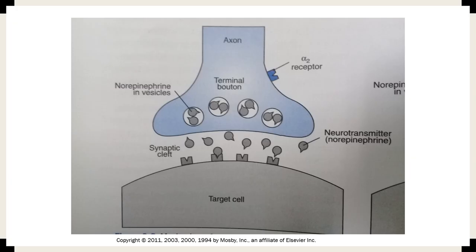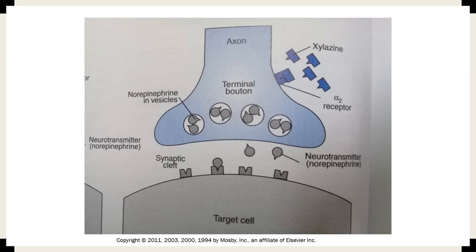To review the mechanism of action of our alpha-2 agonists: we have the axon and the target cell. In the axon, we have vesicles that contain norepinephrine. The axon also has the alpha-2 receptor. What alpha-2 agonists will do — particularly silocene in this diagram — is bind to the alpha-2 receptor so that it will reduce the release of norepinephrine in the synapse.